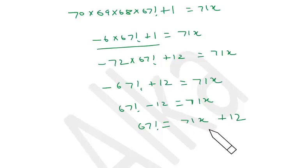Now if we divide this expression by 71, we will be getting remainder 0 here and plus 12 here. So the final remainder when 67 factorial is divided by 71, the remainder will be 12. Because 67 factorial can be written like this. So I hope you are clear.